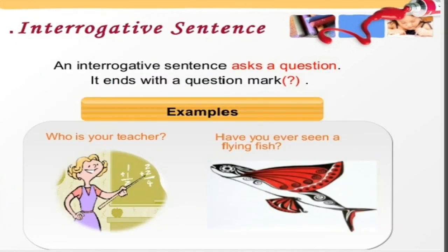The next type of sentence is an interrogative sentence. An interrogative sentence asks a question — interrogation means asking. It ends with a question mark. For example: 'Who is your teacher?' and 'Have you ever seen a flying fish?' In both sentences, we find it ends with a question mark. The first sentence starts with a WH question, while the second starts with an auxiliary verb 'have.'